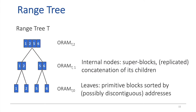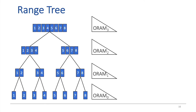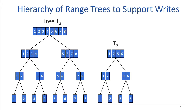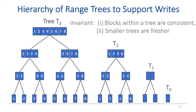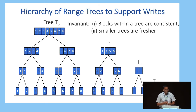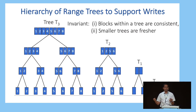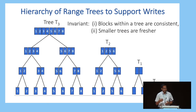In order to support writes, I'm going to use a hierarchy of range trees, where the largest tree contains all of my data and I maintain many smaller range trees with two invariants. The first is the range tree invariant: within a tree, blocks are consistent — if I'm looking for a primitive block, it will be stored at all different heights with the same information. The second invariant is that smaller trees are fresher — blocks may not be consistent across trees, but when I have two copies of a block across trees, the smaller tree has the fresher one. Smaller trees act as a cache or stash for the larger tree.